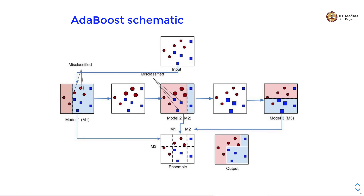For the next round we increase the weights of those misclassified points. In the next round these three points get correctly classified, but there are three squares that are misclassified. We increase the weight of those three points and get the third model, which misclassifies one particular circle. After completing three rounds of boosting we stop, and by combining these three different models we learn a classifier with a complex decision boundary. M1, M2, and M3 on their own are weak models, but together they were able to classify the two classes very accurately.